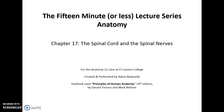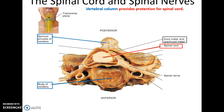15 minutes or less lecture series: human anatomy, chapter 17, the spinal cord and the spinal nerves. The spinal cord is part of the central nervous system. It is found running through the vertebral canal and is protected by the vertebral column from injury. As you can see here, we have the vertebra themselves, spinous process, body of the vertebra, and here is the spinal cord.